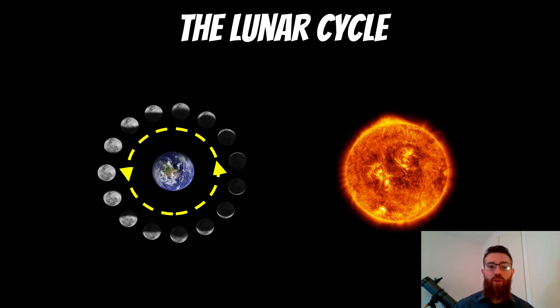The lunar cycle relates to the relative positions of the moon, the earth and the Sun. The earth is on an orbit around the Sun and the moon is on an orbit around the earth.